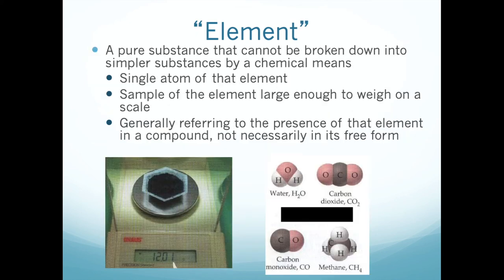What does it mean to be an element? In the last chapter, we talked about how pure substances could be broken down to elements or compounds. If you have a sample of an element, all of the atoms making up that sample are identical in a certain respect. For example, a sample of charcoal is pure carbon — carbon is element number six, symbol C, and each of the atoms making up the sample are carbon atoms.